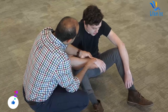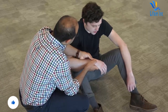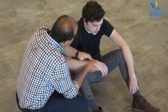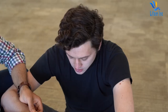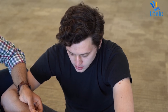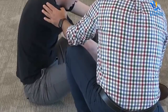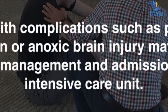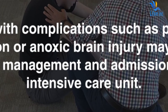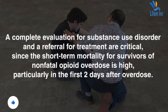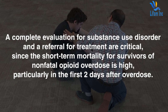After successful reversal of opioid toxicity, monitor the patient for complications such as opioid withdrawal or, rarely, non-cardiogenic pulmonary edema, and maintain surveillance. Provide cardiovascular and respiratory support as needed. Obtain a complete patient history and conduct a physical examination to identify coexisting conditions or injuries. Patients with complications such as pulmonary aspiration or anoxic brain injury may require airway management and ICU admission. A complete evaluation for substance use disorder and a referral for treatment are critical, since short-term mortality for survivors of non-fatal opioid overdose is high, particularly in the first two days after overdose.